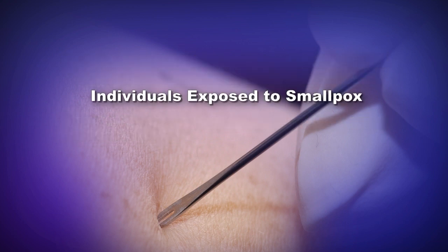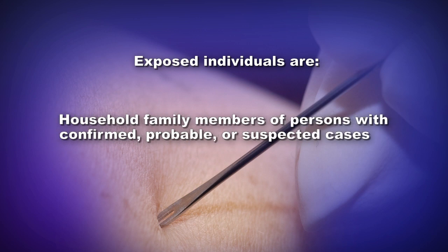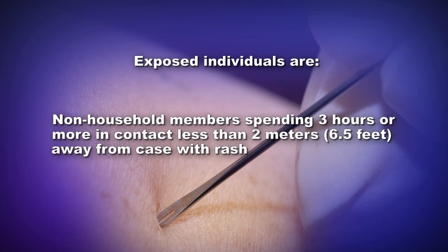Individuals exposed to smallpox are defined as individuals directly exposed to an accidental or intentional smallpox virus release; household family members of persons with confirmed, probable, or suspected cases; and others spending greater than or equal to 3 hours in the household since onset of fever in a case; or non-household members with greater than or equal to 3 hours of contact less than 2 meters (less than 6.5 feet) away from a case with rash.